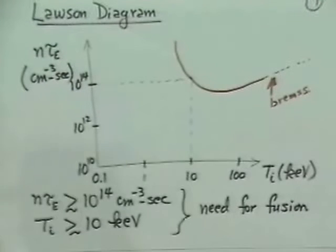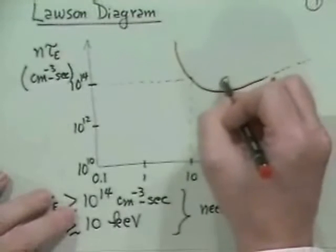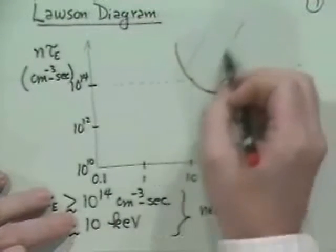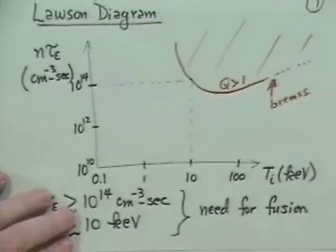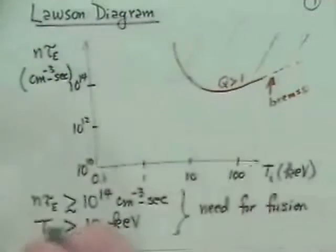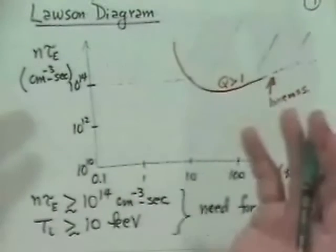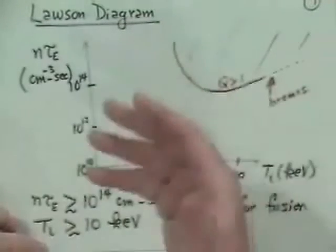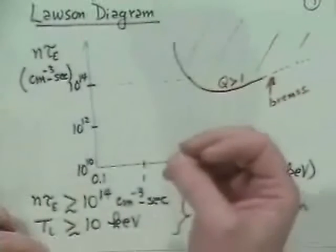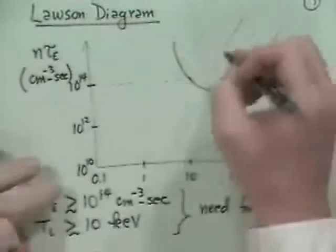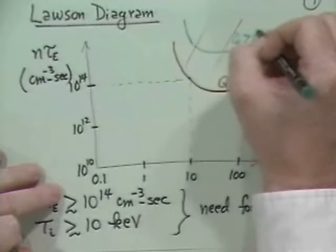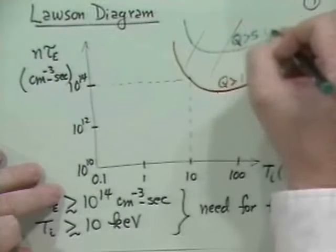That defines the region above Q = 1 — net energy out of a controlled fusion system. Remember that 20% of the charged particle energy goes into the background plasma. So if Q is greater than 5, you might have an energy self-sustaining reaction — analogous to a fission system going critical. That is called ignition in the fusion business — Q greater than 5, which is the ultimate goal.